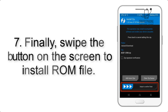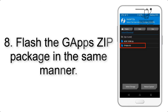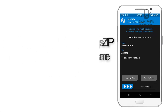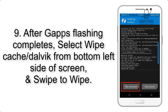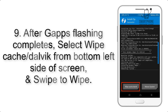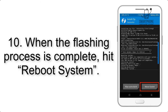Step 7: Swipe the button on the screen to install the ROM file. Step 8: Flash the GApps zip package in the same manner. Step 9: After GApps flashing completes, select Wipe Cache and Dalvik from the bottom left side of the screen and swipe to wipe.